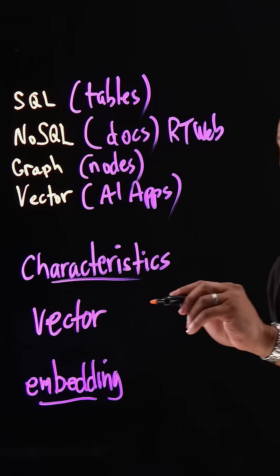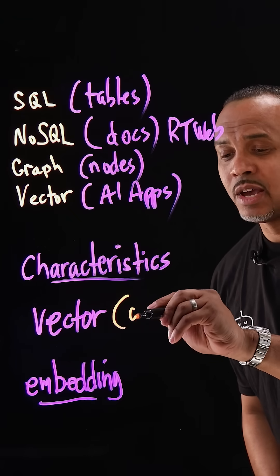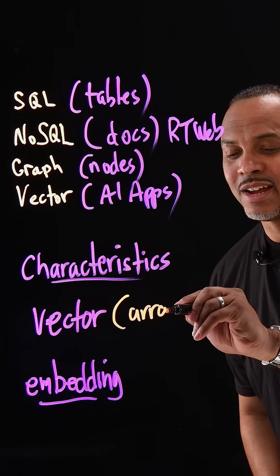Think about a vector as an array of data that gets put into the database. Any type of complex object you put in, whether it's images, text, or documents, they all get represented in some type of numerical value. So I'm going to say this as an array.